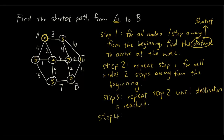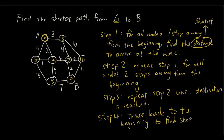Step 4: trace back to the beginning to find the shortest path. So from the end we are going to find out how we got 9. 9 came from 7, so we connect that. 7 came from 4 — actually 3 — so we connect that. And 3 came from A, so we connect that. That is our shortest path.